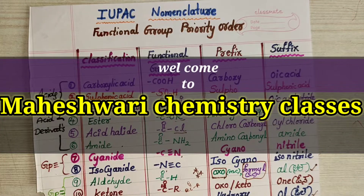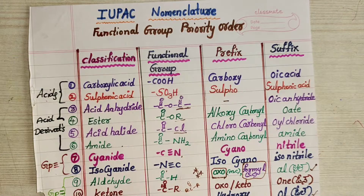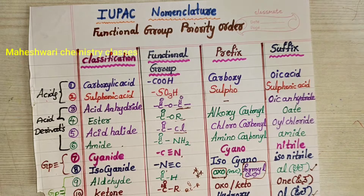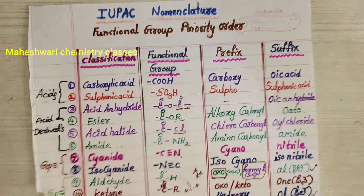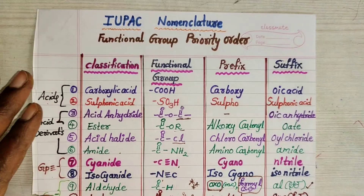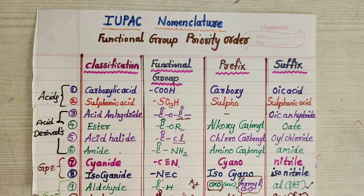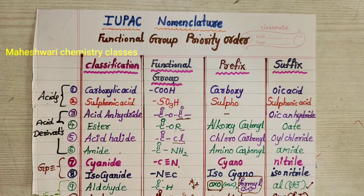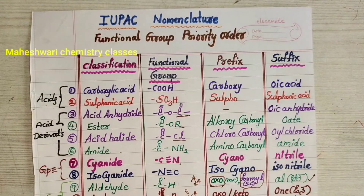Welcome to Maheshwari Chemistry Classes. Today our topic is IUPAC Nomenclature Functional Group Priority Order. Before starting the topic, please subscribe to my channel Maheshwari Chemistry Classes and compulsorily share with your friends.